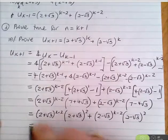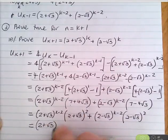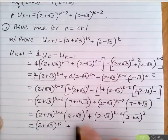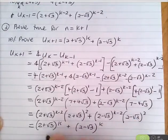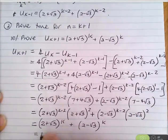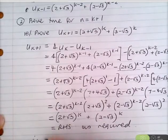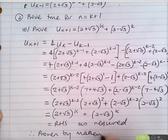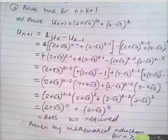Therefore we have (2+√3)^{k−2} · (2+√3)² + (2−√3)^{k−2} · (2−√3)² = (2+√3)^k + (2−√3)^k, which equals the right-hand side as required. Therefore proven by mathematical induction for n ≥ 1.